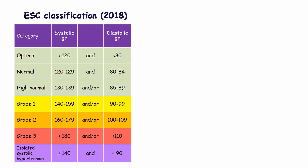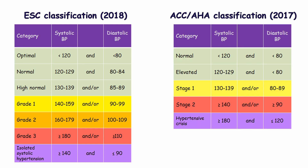Grade 3 hypertension is diagnosed if systolic blood pressure is 180 mmHg or more and/or diastolic is 110 mmHg or more. Isolated systolic hypertension is diagnosed if systolic blood pressure is 140 mmHg or more and diastolic blood pressure is less than 90 mmHg, and is graded 1, 2, or 3 according to systolic blood pressure. Home blood pressure monitoring and ambulatory blood pressure monitoring can also establish a diagnosis.